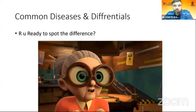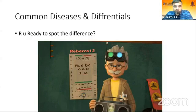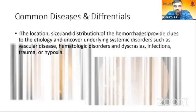Looking at common diseases and differentials, the location, size, and distribution of hemorrhages provide clues to the etiology and can uncover underlying systemic disorders such as vascular diseases, rheumatological disorders, dyscrasia, infections, trauma, and hypoxia.